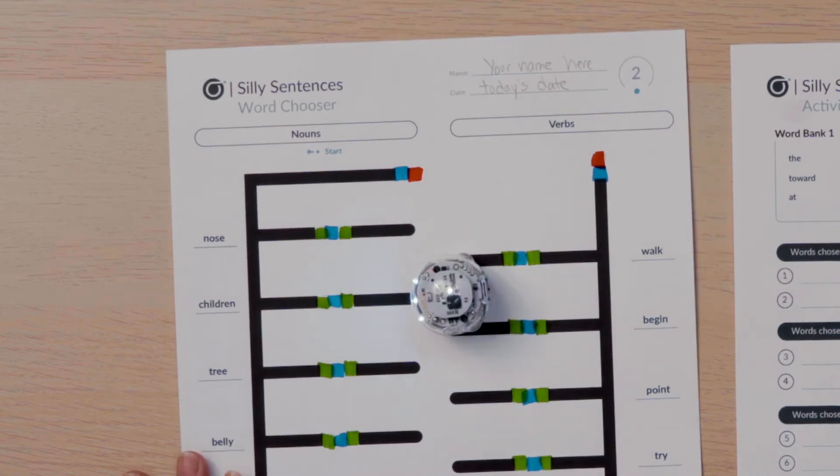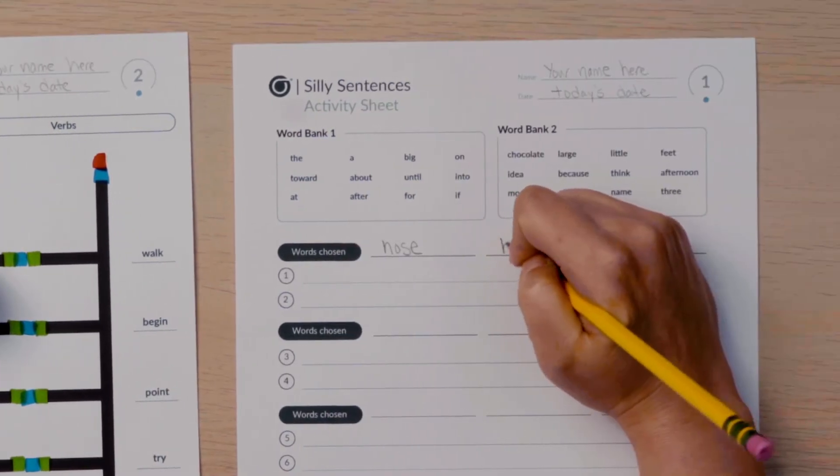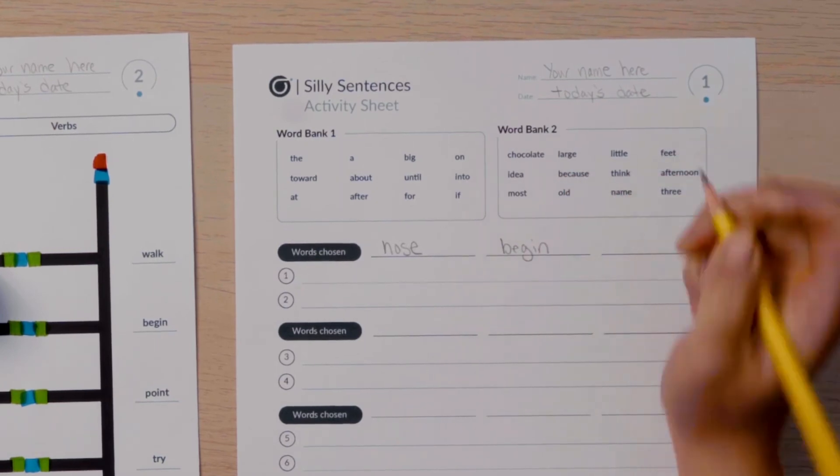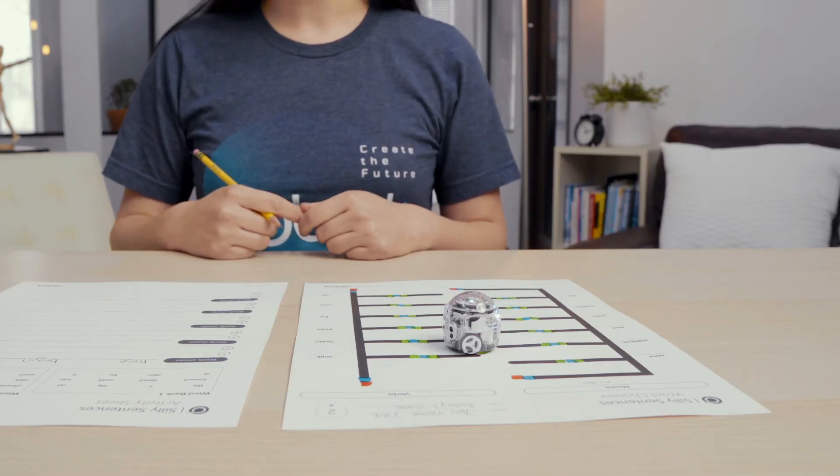My bot turned down begin. I will write the verb begin on my activity sheet next to the first word. My bot will cross back over to the noun side and choose another noun.